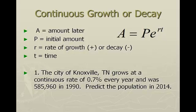A stands for the amount that we have later on. P stands for the initial amount — the one we start with. E is an actual number, like pi is an actual number, so just leave it as E and use the E button on your calculator. R is our rate of growth or decay. If you're increasing or growing, your rate is positive. If you're decaying or decreasing, your R value is negative. Usually, they give it to you as a percentage, and you have to move your decimal two places to the left to change it to decimal form.